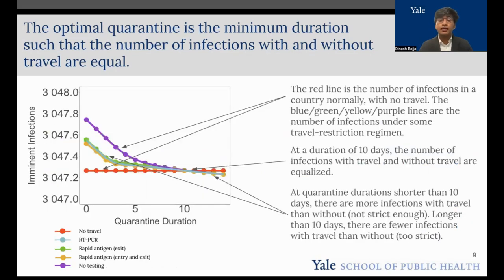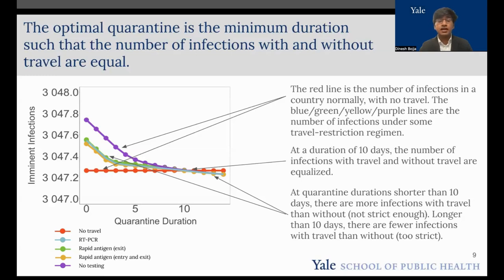After running the model, we get a graph similar to this. On the x-axis, we have the quarantine duration, and on the y-axis, we have the imminent infections. The red line represents the number of infections normally, with no travel. This makes sense why it's horizontal, as an increase of duration with no travel shouldn't change the number of infections. The rest of the lines represent different testing policies and are downward-trending, because an increase of quarantine duration means a decrease in the number of infections, as all the people who have infections get cured of their disease before they enter. These lines all intersect at around 10 days, meaning that the optimal quarantine is a duration of 10 days. Any earlier means more infections coming in than with no travel, and any longer duration means unnecessarily strict restrictions, causing extra economic burden on the country.